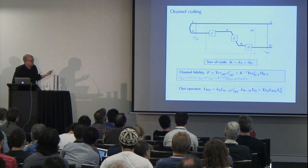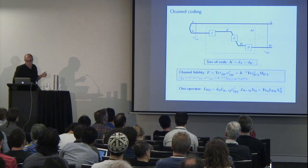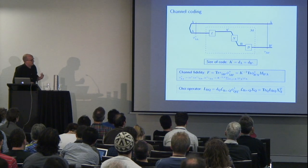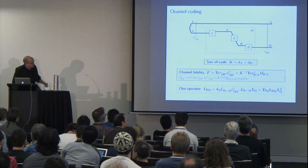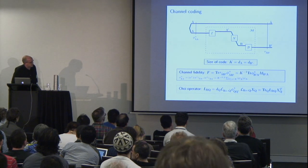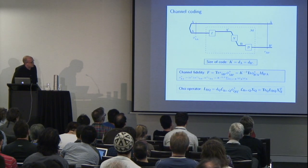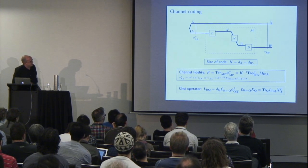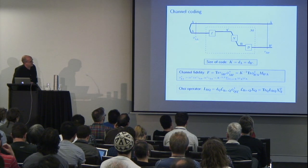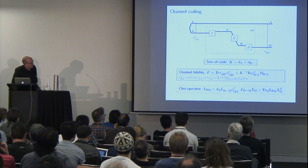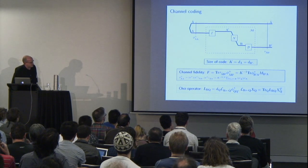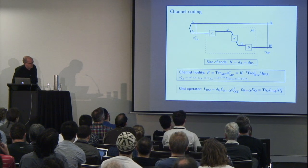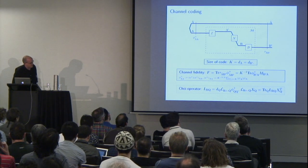Channel fidelity basically measures how well the channel can transmit one half of a particular isotropic maximally entangled state. This is a nice measure because it's a simple function of the average fidelity of the channel, which in turn gives an upper bound on the worst-case fidelity. It can also be written as a simple linear functional of the Choi operator associated with the map M.